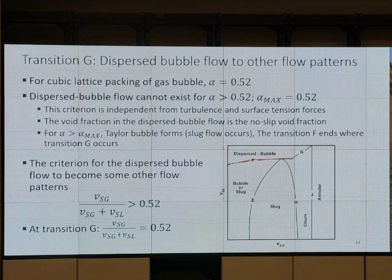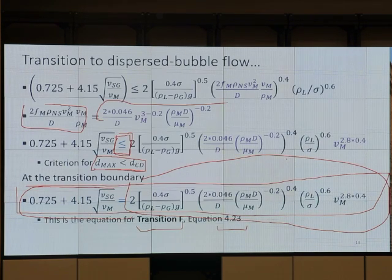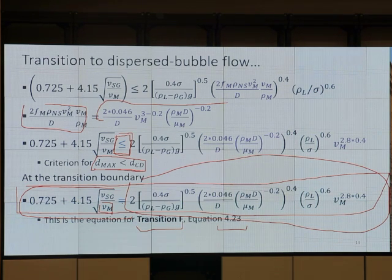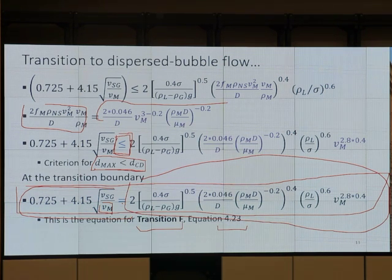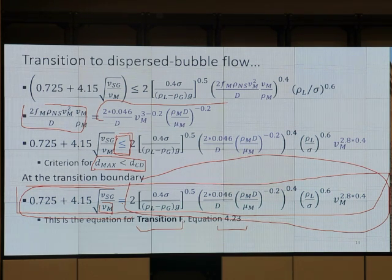We have the mixed velocity Vm. If we want to be dispersed, because the superficial velocity of the liquid is high, we need to put a less than sign.